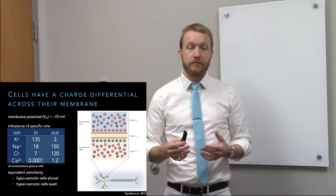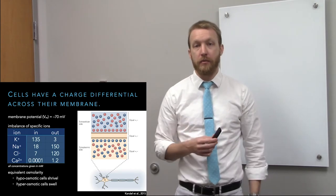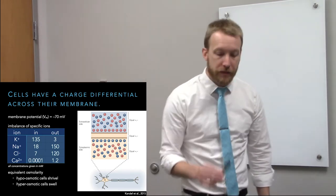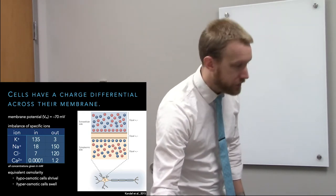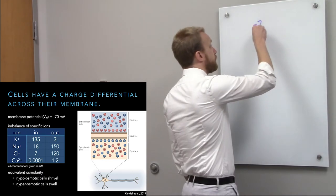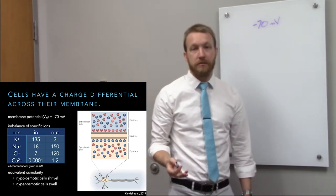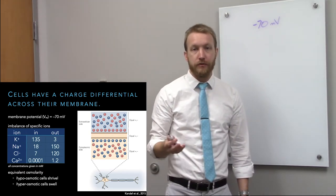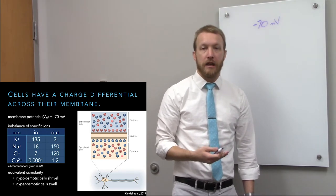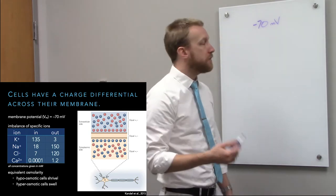The movement of ions depends on their concentration on each side of the membrane and what's the current charge at the membrane. For a resting neuron, -70 millivolts is the ballpark estimate. Every cartoon neuron rests at -70 mV; in real life some rest a little more depolarized, some more hyperpolarized — it depends on the cell.